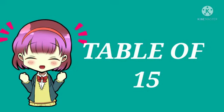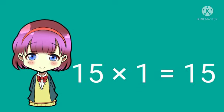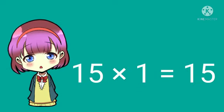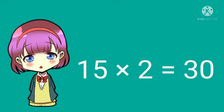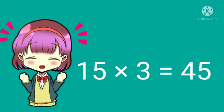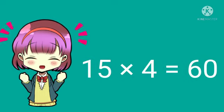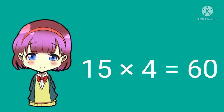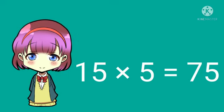Table of Fifteen. Fifteen ones are fifteen. Fifteen twos are thirty. Fifteen threes are forty-five. Fifteen fours are sixty. Fifteen fives are seventy-five.